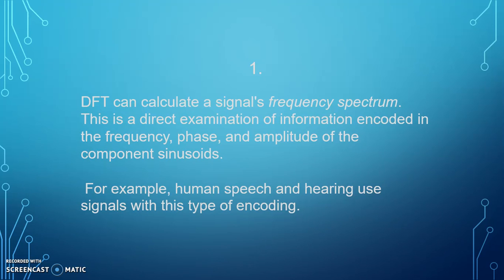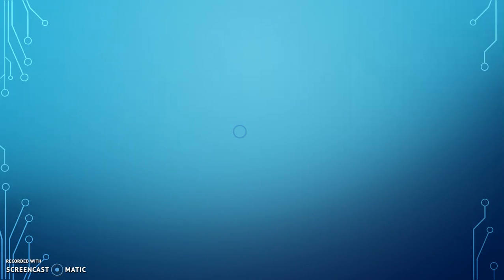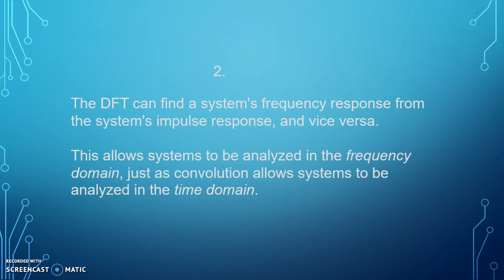For example, human speech and hearing use signals with this type of encoding. As we all know, the human range of audibility ranges between 20 hertz to 20 kilohertz. That is the frequency spectrum of human hearing.